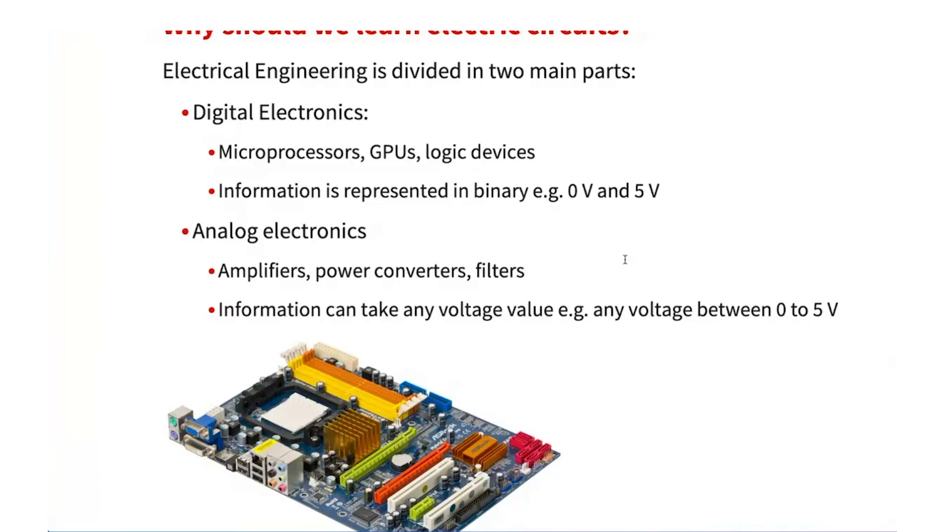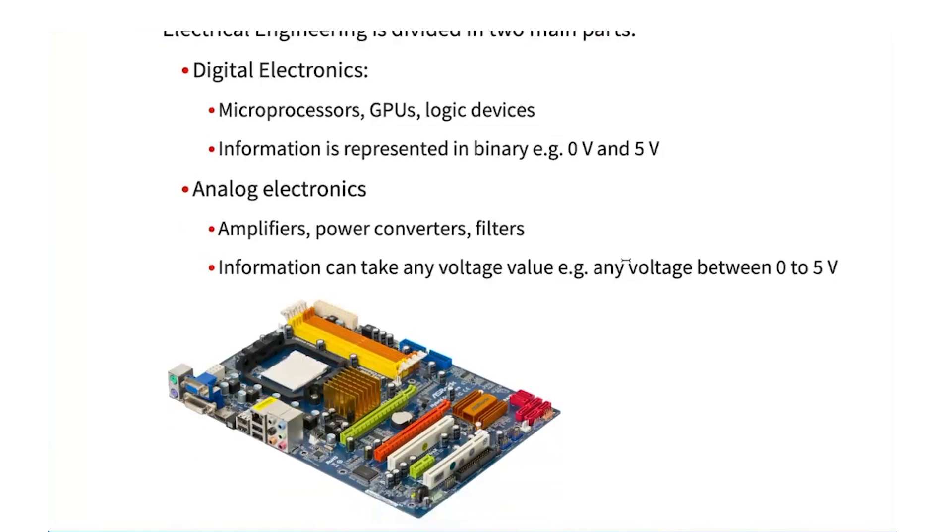And one of the differences is how these two domains represent the information. In the digital world everything is represented with binary, so we can use voltages, two voltages to represent a logic zero or a logic one which can be zero volts to represent a zero, five volts or something else to represent a one. But in the analog domain the information can take any value. So it can be for example any voltage between zero to five to represent a temperature that's coming from a sensor.